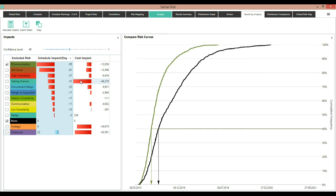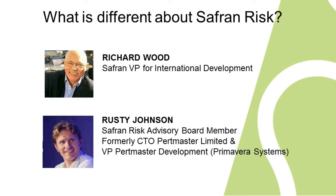Thanks, Rusty. That was very clear. Before I wrap up finally, is there anything else you'd like to add? Well, just that I think Saffron Risk has the potential to be a much better product than PertMaster ever was, and that's for a number of reasons. Number one, it's built around a really robust scheduler. Number two, it's got the benefit of hindsight of all the mistakes and good things that we did at PertMaster. And number three, I think the team at Saffron reminds me a lot of PertMaster in the good old days — they're really responsive, they want to make a difference, and I think they can.